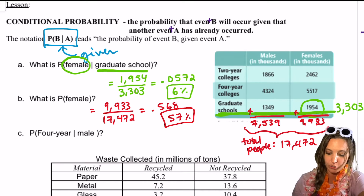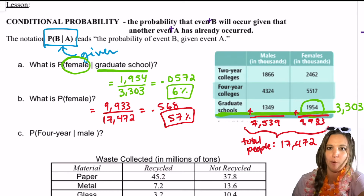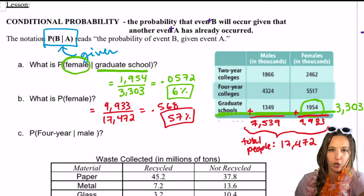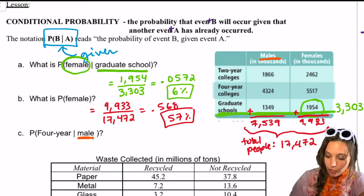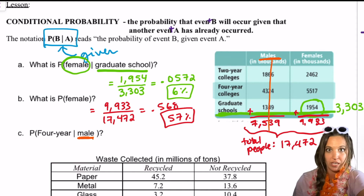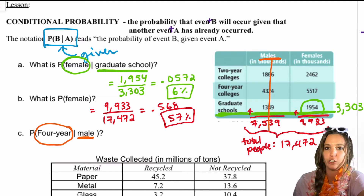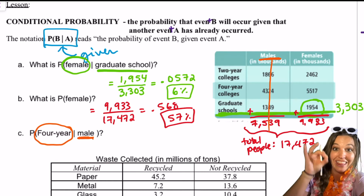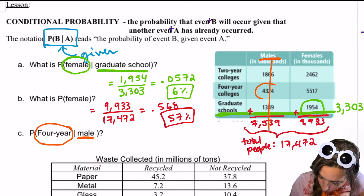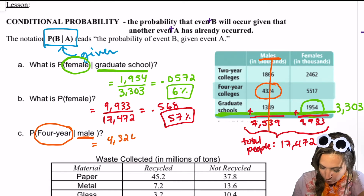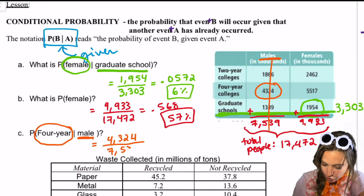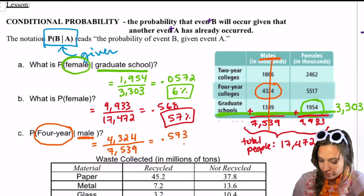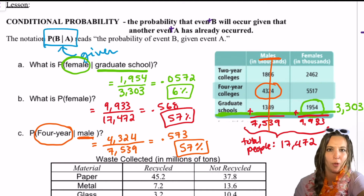The probability that we choose someone that went to a four-year school given that they're male. Let's focus on the given first — I'm going to underline 'male' and go to my table and underline male there. Since that's labeling a column, I'm going to drag my line straight down. Then I want to focus in on those that went to a four-year school. So 4,324 out of 7,539 comes out to about 0.573, so 57% again. Let's look at another example that has a little bit more going on.